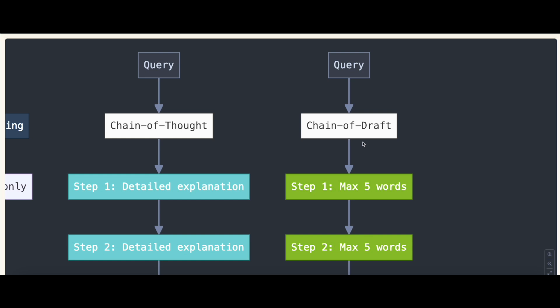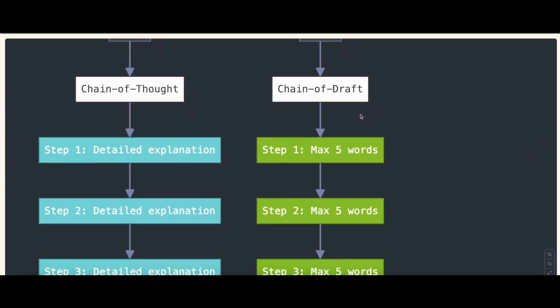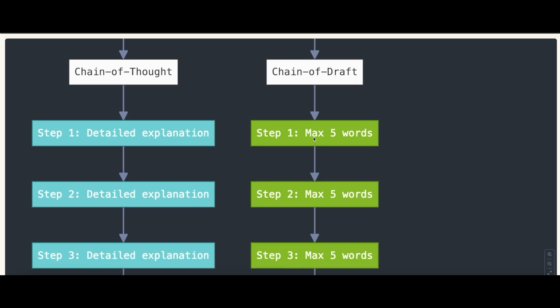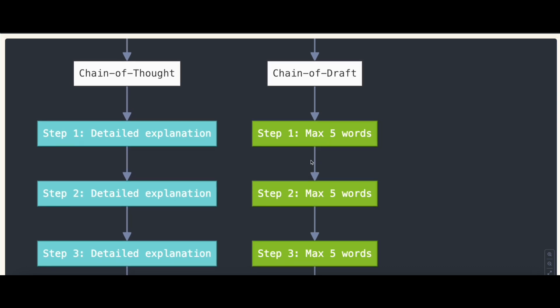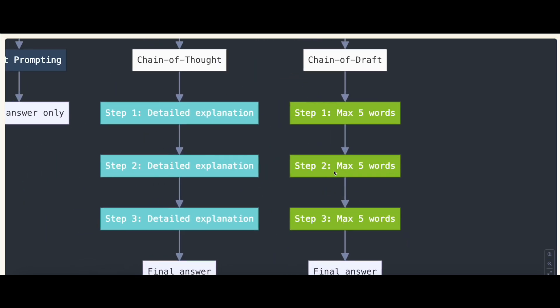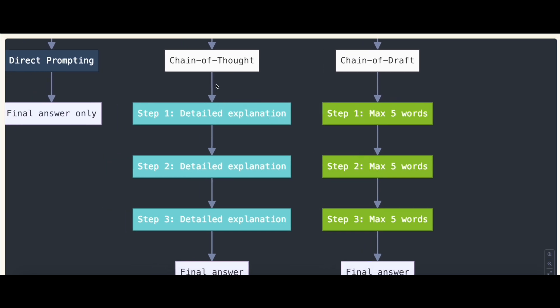But now with Chain of Draft, we will actually enforce the language model to come up with the answer step-by-step, but each step is much shorter, maybe just max five words. So we are decreasing the number of tokens, increasing the latency, and from a performance perspective, it seems like it's not only overlapping Chain of Thought but also even better.